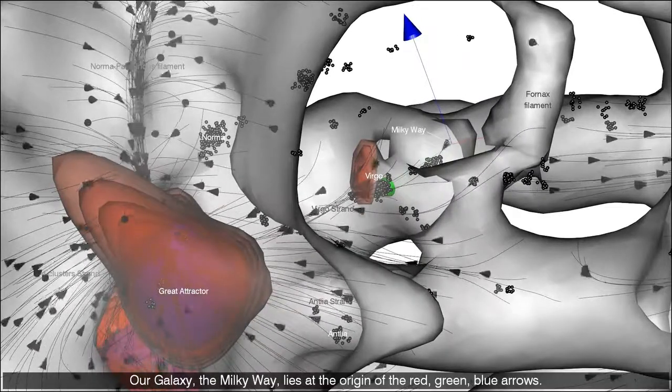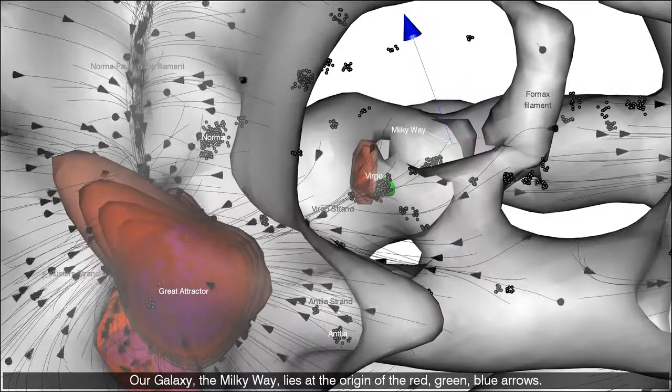Our galaxy, the Milky Way, lies at the origin of the red, green, blue arrows.